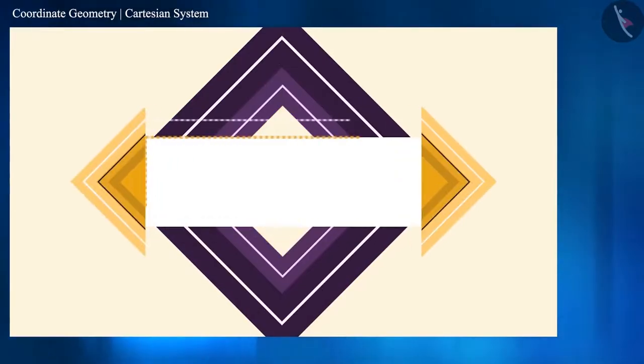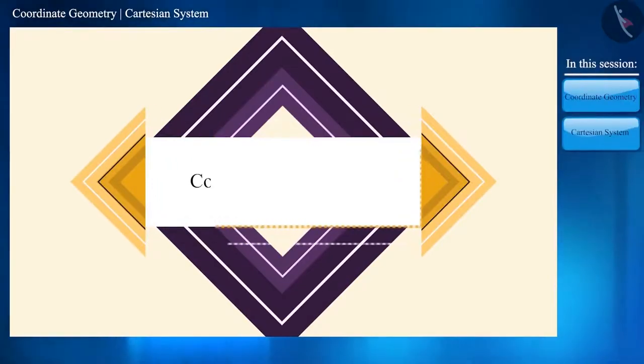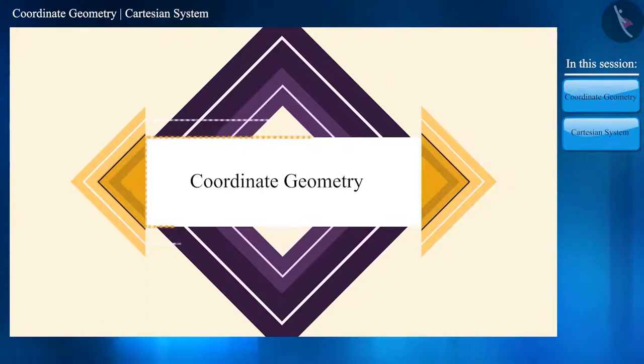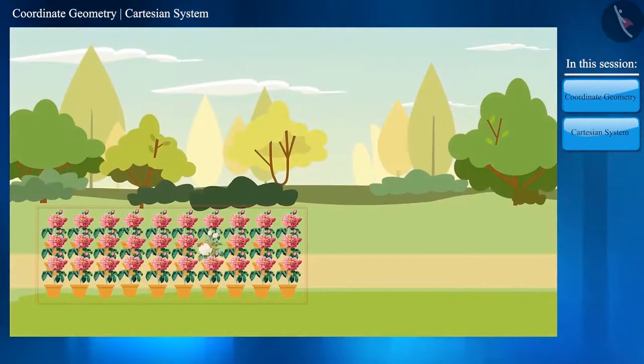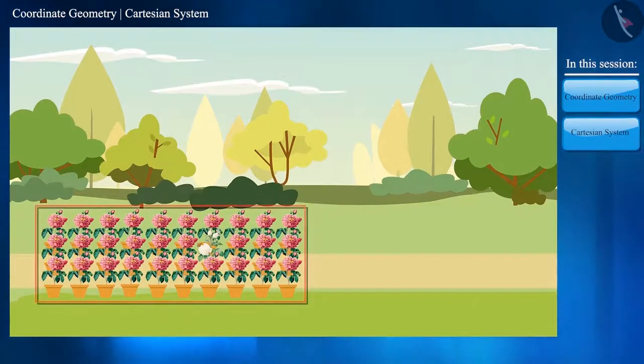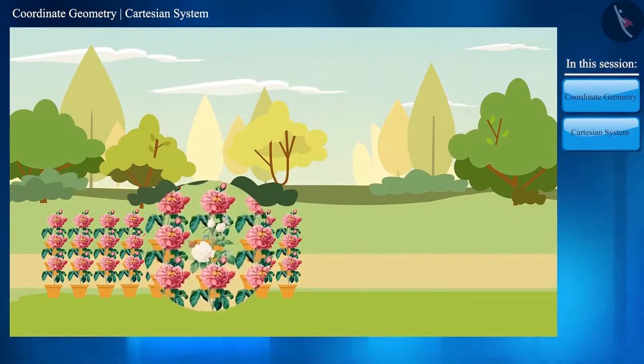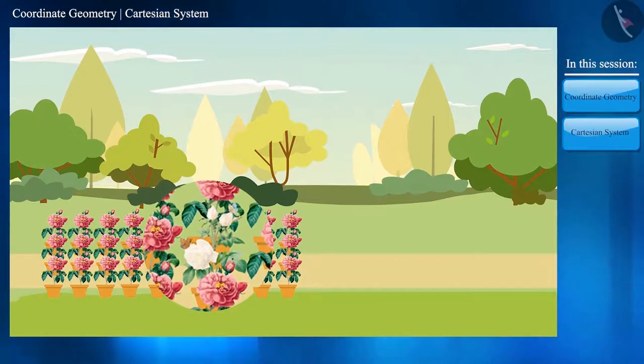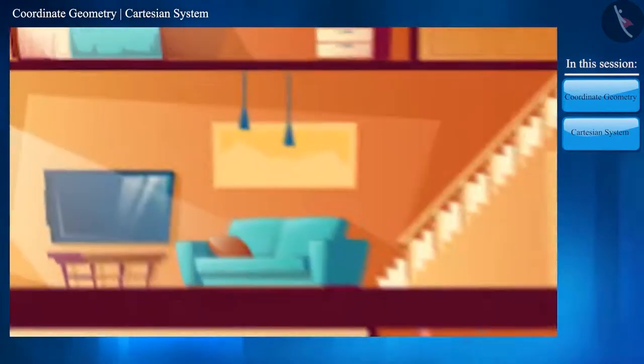Hello friends, welcome to this video of coordinate geometry. Let us start this session with a story. In a field, many plants were planted, of which there was only one plant which had white roses on it. Rahul's mother asked him to get the same plant with white flowers. She added that it is kept in the northeast direction of the garden.